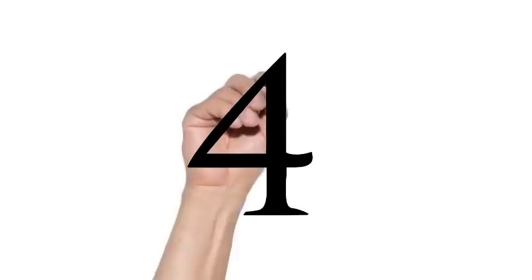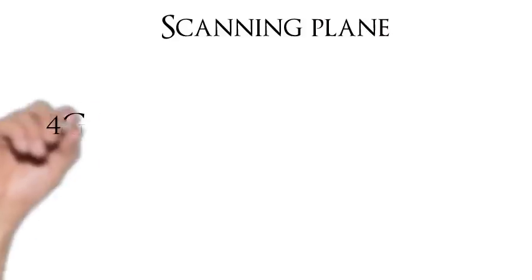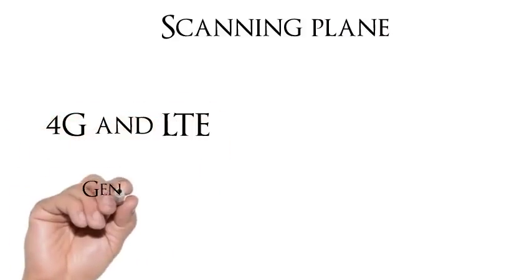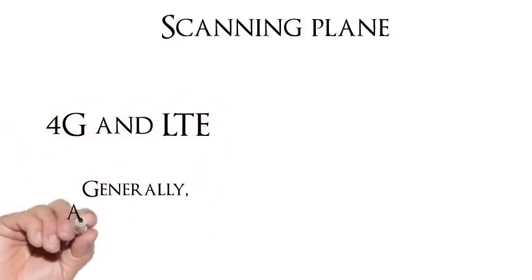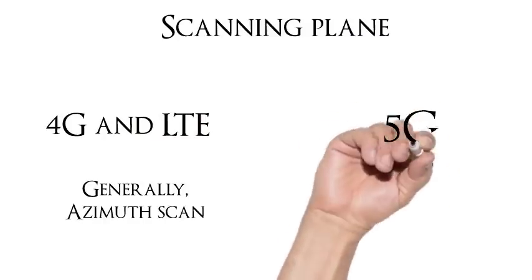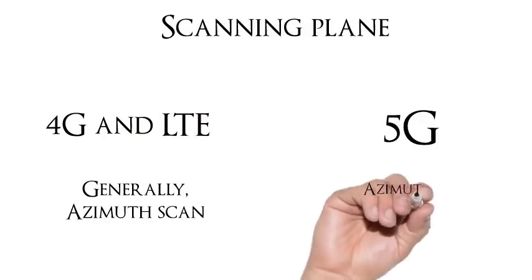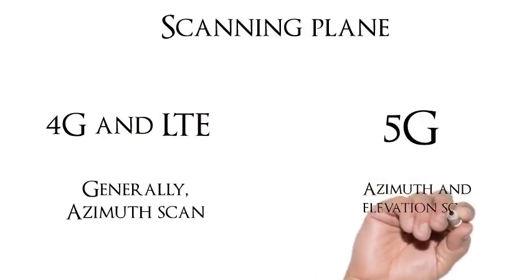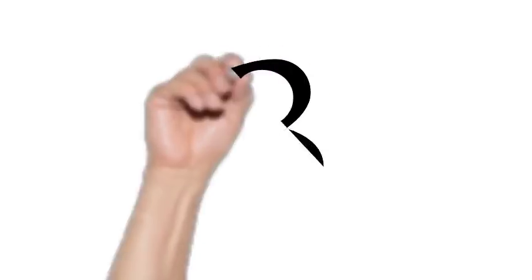Number 4: The scanning plane. For 4G and LTE, generally azimuthal scan is done. Whereas for 5G, both the azimuthal and the elevation scans are targeted.